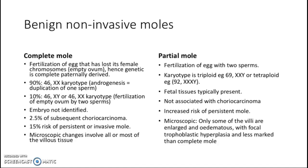Complete mole is associated with subsequent choriocarcinoma, while partial mole is not associated with choriocarcinoma. In a complete mole, there is a 15% risk of persistent or invasive mole, while in a partial mole, there is an increased risk of a persistent mole. Microscopically, in a complete mole the changes involve all or most of the villous tissues, while in a partial mole the microscopic features show only some of the villi are affected — enlarged and edematous — with focal trophoblastic hyperplasia, and it is less marked than in a complete mole.